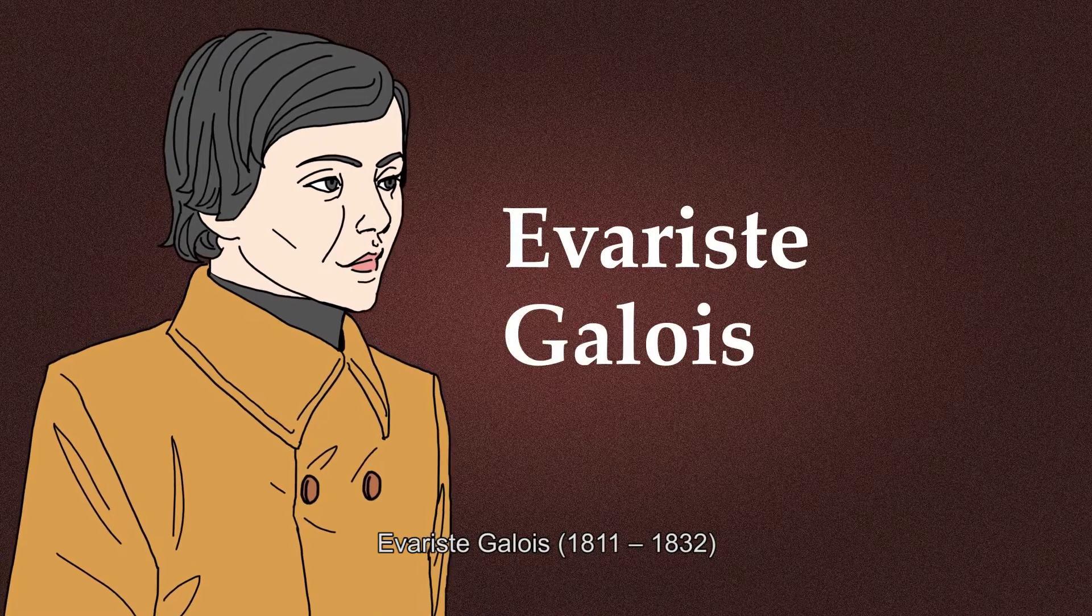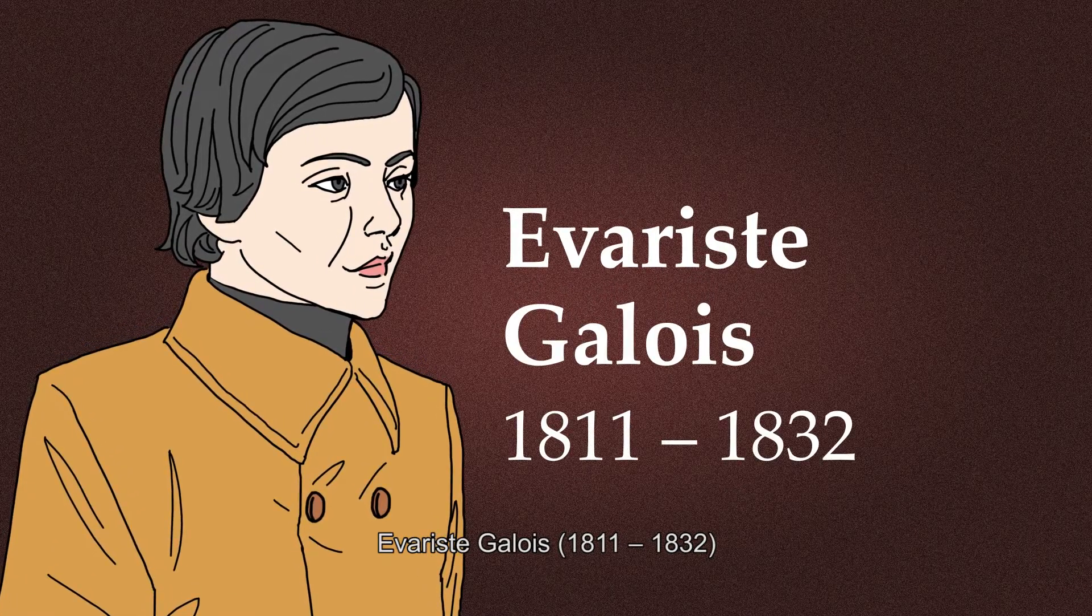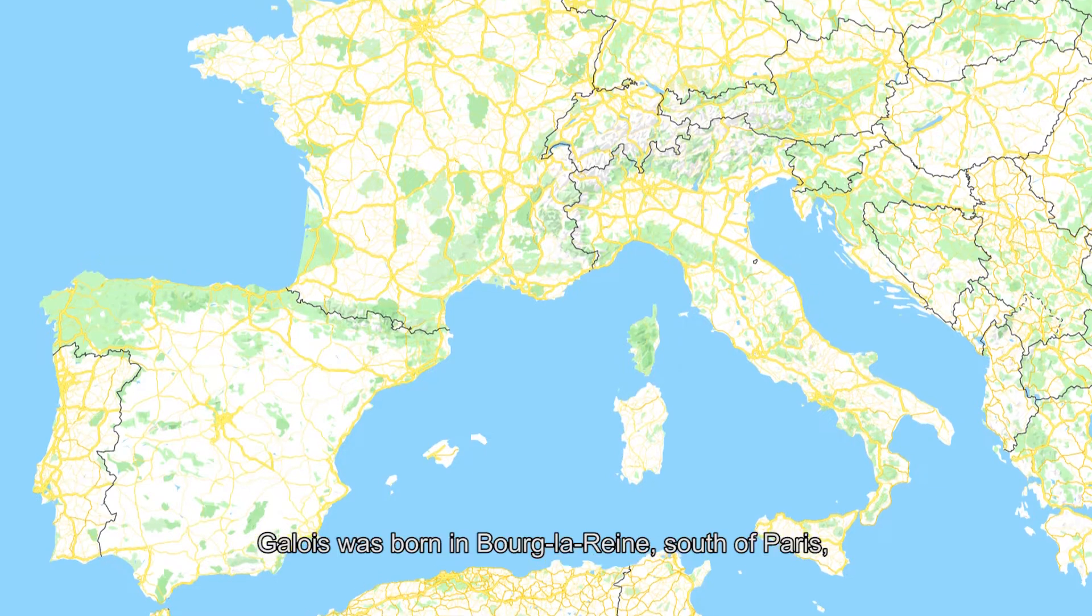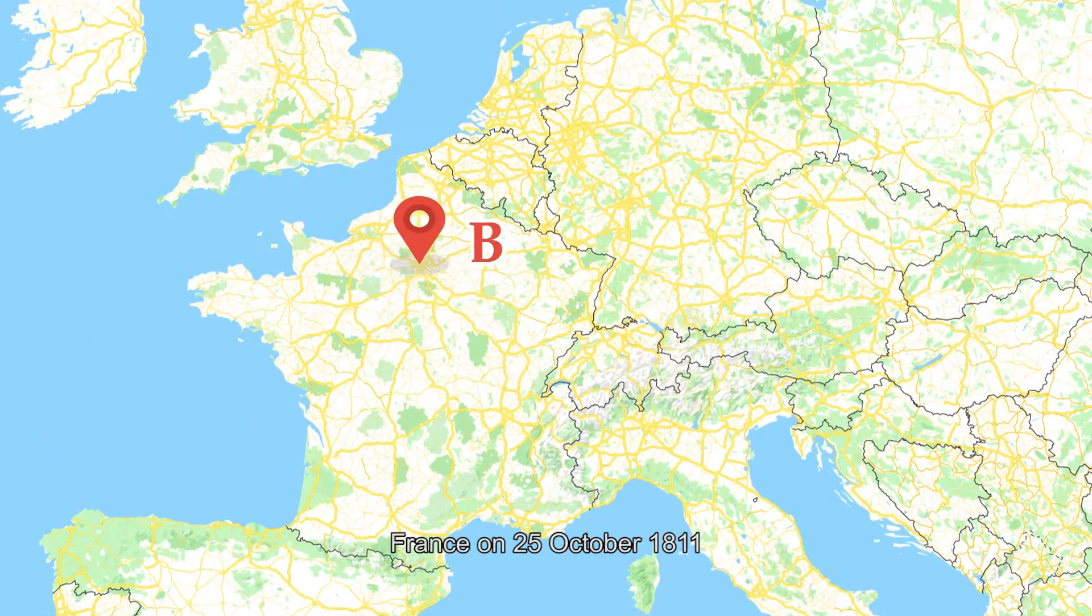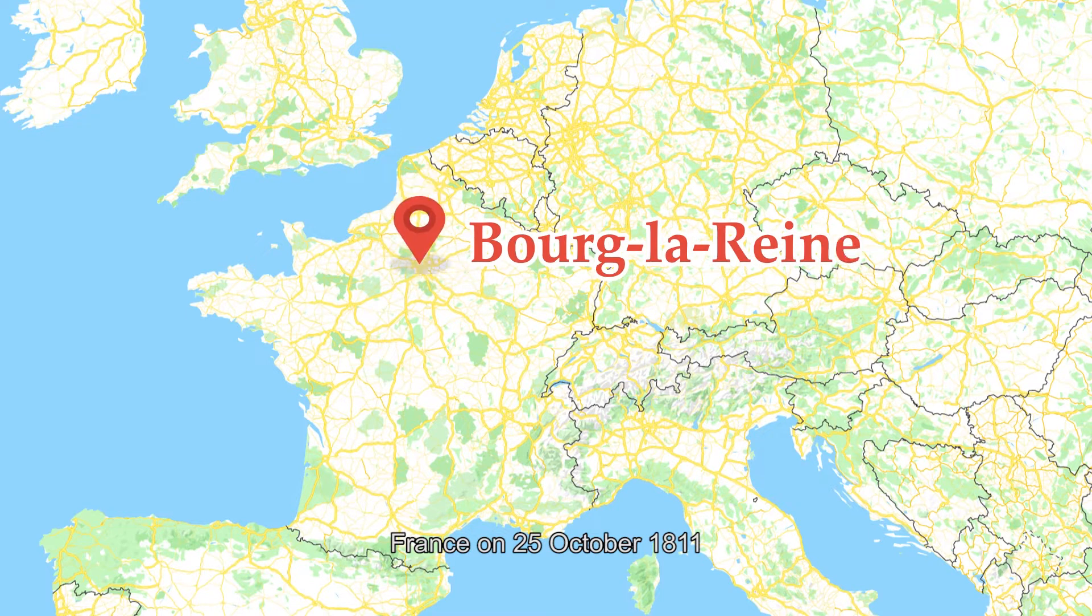Évariste Galois, 1811 to 1832. Galois was born in Bourg-la-Reine, south of Paris, France on the 25th of October, 1811.